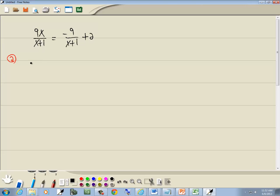So our LCM is going to be x plus 1. We'll multiply it times our first fraction, so I'll multiply it times the 9x over x plus 1. Multiply it times the fraction on the right side, times the negative 9 over x plus 1, and we'll also multiply it times the 2. Now these x plus 1 cancel, and these x plus 1 cancel. So we've got 9x is equal to negative 9 plus 2 times x is 2x. 2 times 1 is 2.